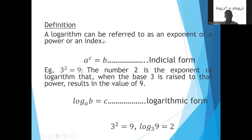A logarithm can be referred to as an exponent, a power, or an index. When we look at this, we have a raised to the power c being equal to b, and we call this the indicial form. So a is the base, c is the power, and b is the number. This is known as the indicial form.